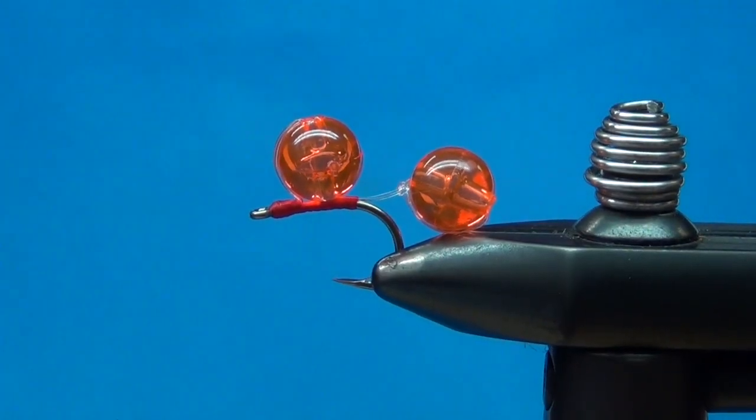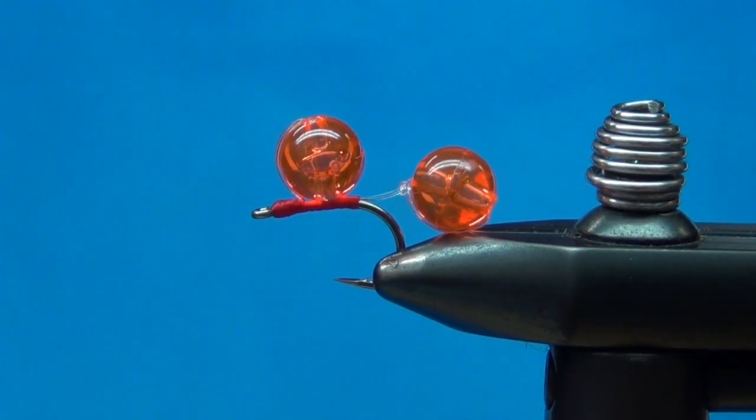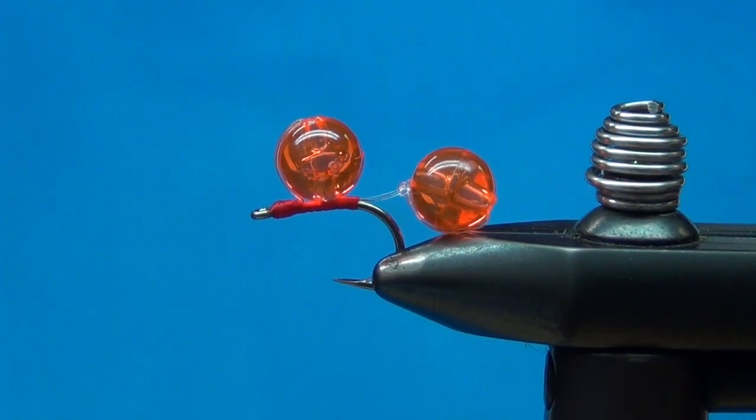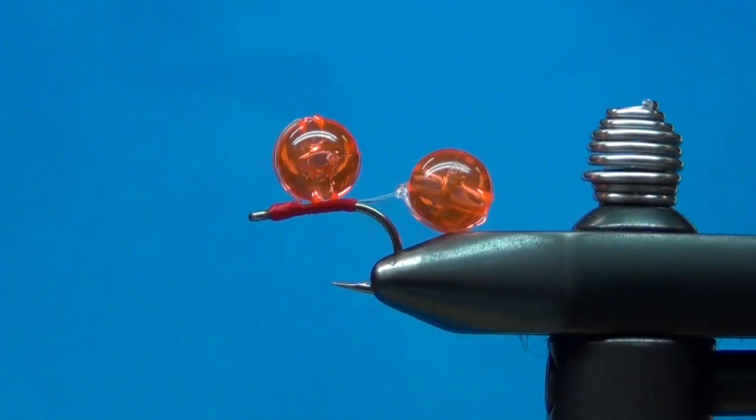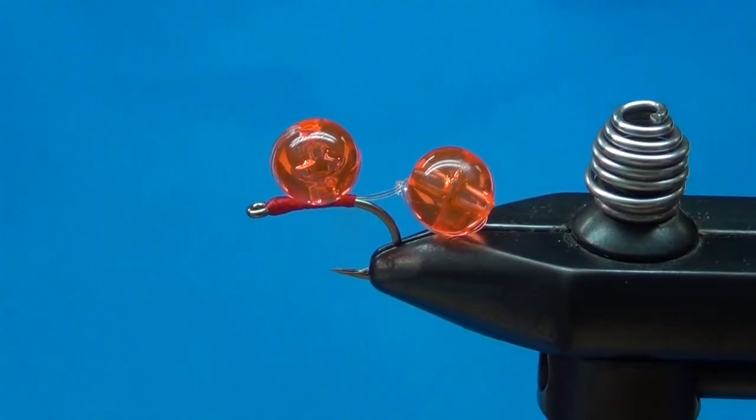When you're salmon fishing and fishing those tribs at the salmon run, those salmon are up there spawning. The brown trout and the steelhead and the atlantics come up and they're eating those eggs, so they're in egg mode. They will eat other things but they're really keying in on those eggs.